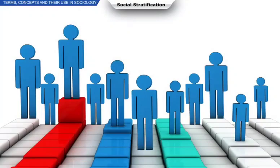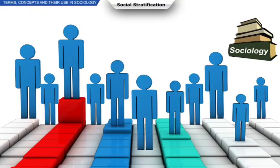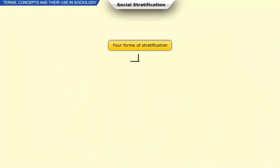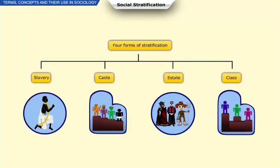Stratification is a very important aspect of study in sociology since every individual is influenced by it. In earlier times, there were four primary forms of stratification in society: slavery, caste, estate, and class.